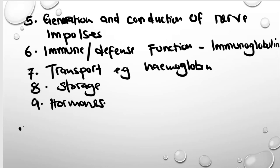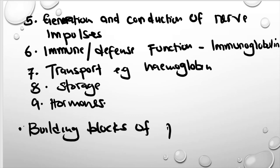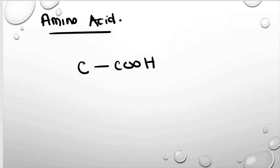Now let's look at the building blocks of proteins, which are amino acids. An amino acid is made up of a carbon bonded to a carboxyl group, an amino group, an R group (also called an alkyl group), and a hydrogen. This is the general structure for an amino acid.